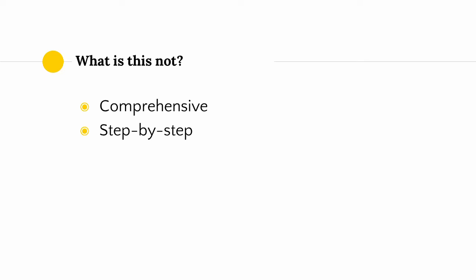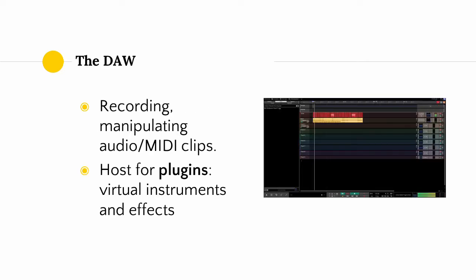So I can't give you a step-by-step tutorial. What I can do is start you off with the basics and highlight the common elements that are important in music production. Chances are, if you want to start off in music production, the first thing you're going to need is a piece of software known as the Digital Audio Workstation, also known as the DAW.